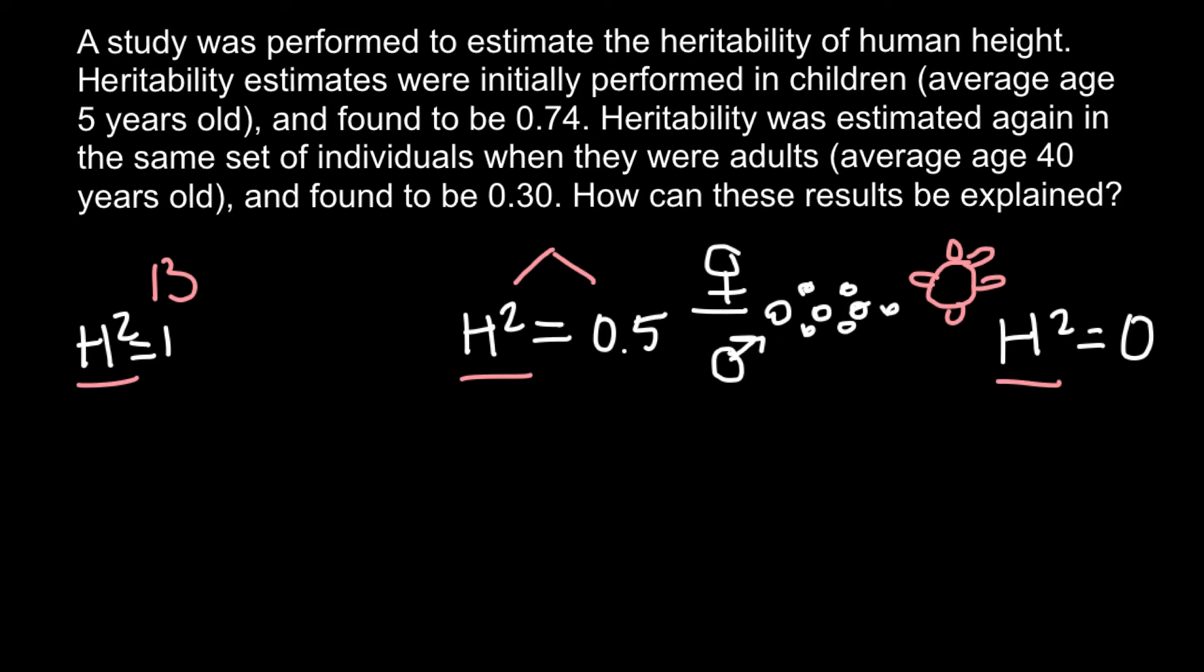And now you are ready for this formula. This is very simple formula. So H capital squared, and here is the importance that I am saying capital because we also have H lower case which stands for the narrow sense heritability, and H capital squared stands for the broad sense heritability which equals to variance genetic divided by variance phenotypic. And in this case we can say that here we have one or 100%. And what is the variance phenotypic?